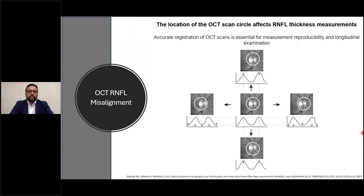Gabriel et al looked at the location of OCT scans and how they affect RNFL thickness measurements. They found that when the scan circle was displaced horizontally, the peak values didn't change but the peaks were either nasally or temporally shifted based on which side was overcorrected. Vertical displacements didn't change the peak location but changed the peak values — specifically, the inferior and superior RNFL thicknesses changed.